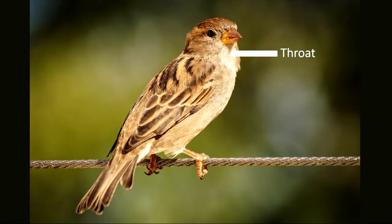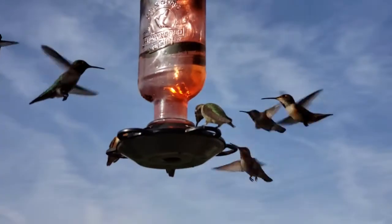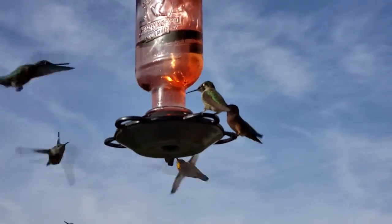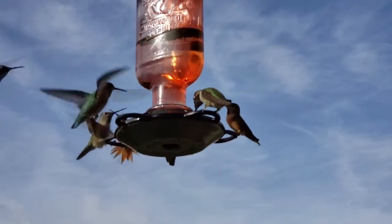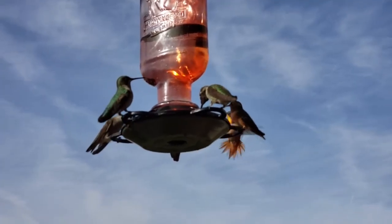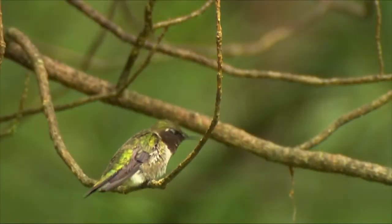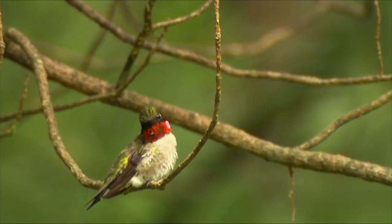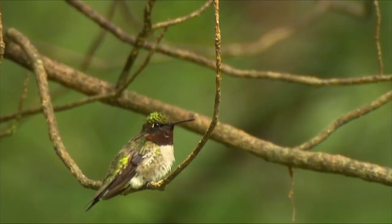The throat refers to the front of the part just below the head of the bird. Some of the most fascinating throats belonging to birds are those of the hummingbirds. In the world of hummingbirds, throat colors vary from red, purple, black, pink, blue, green, and on females, white.